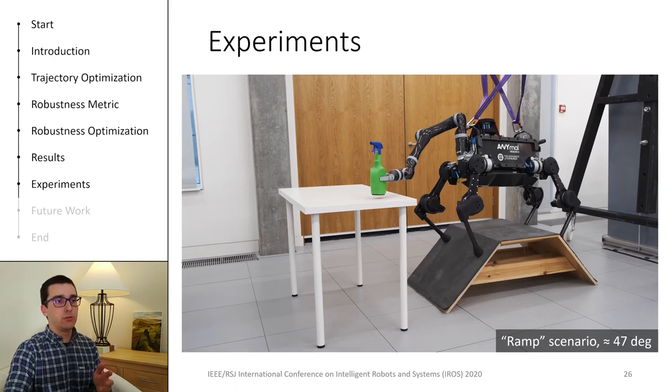This next video shows the robot on the ramp scenario, which is challenging due to the slopes with a grade of 47 degrees.